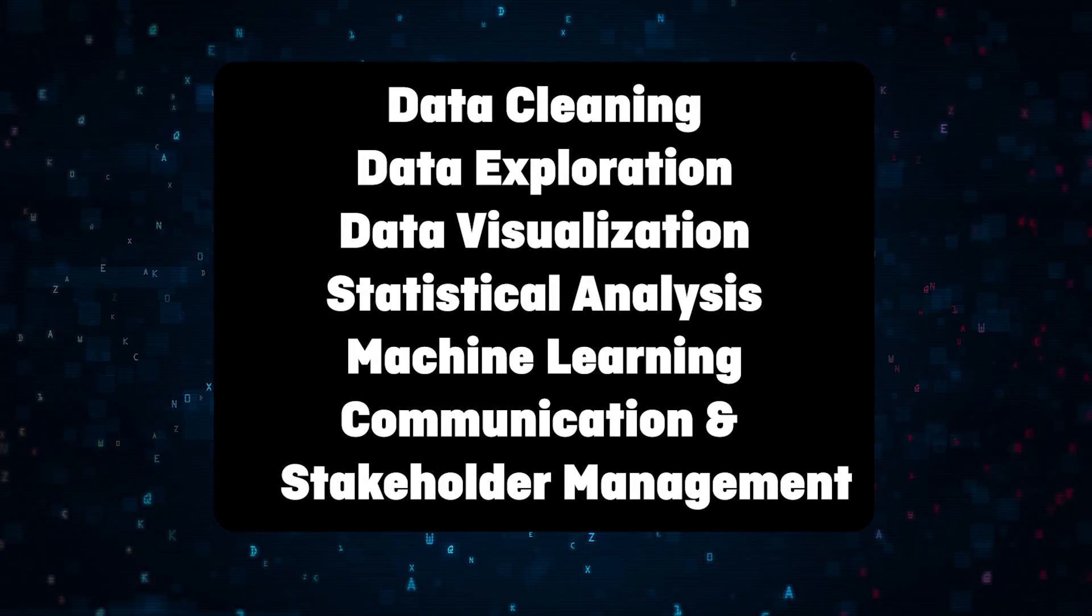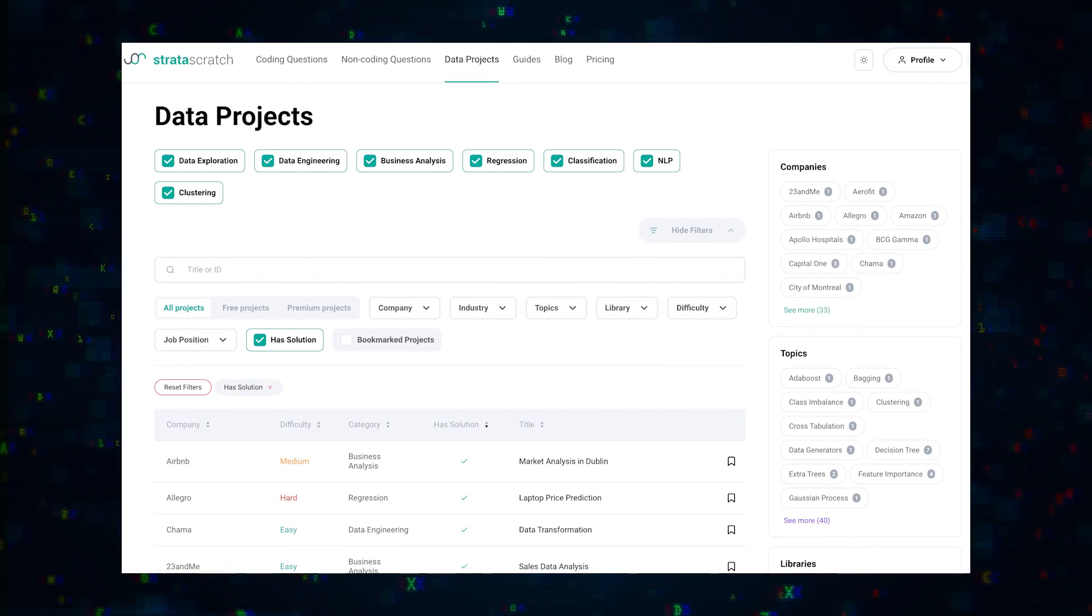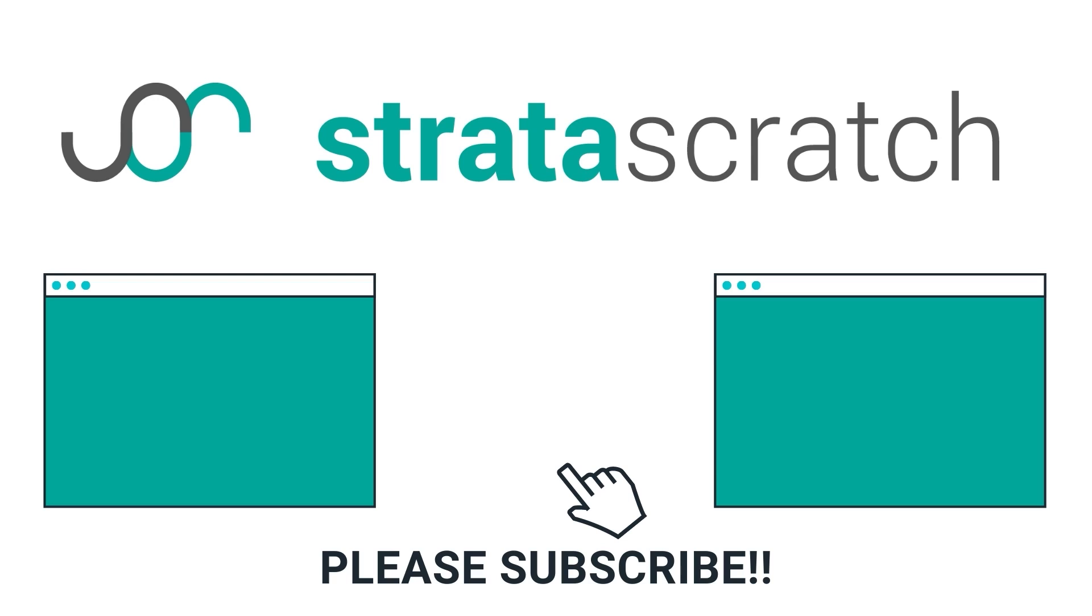So that's basically it. That's about six skills to learn as a data scientist and 14 Python libraries. If you want any examples of data projects, please go to the data projects section on the Strata Scratch platform. And if you found this video helpful, please don't forget to like, share, and subscribe. Thank you for watching. We'll see you in the next one.